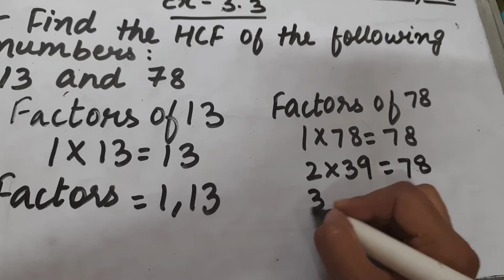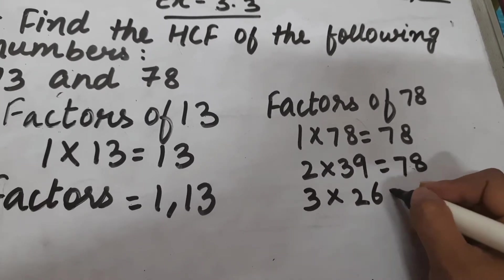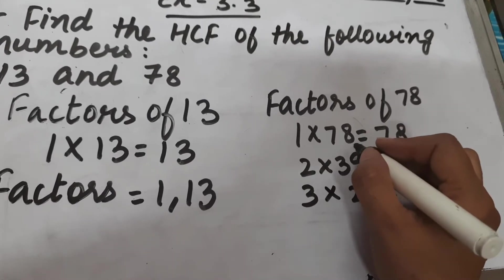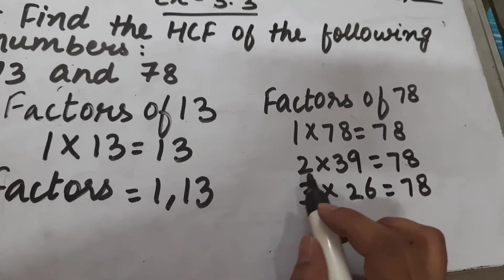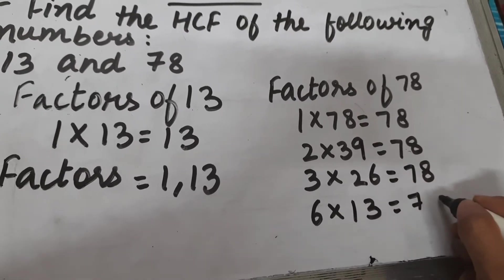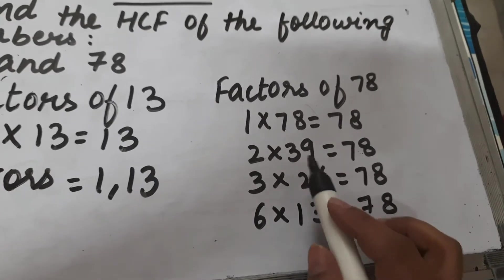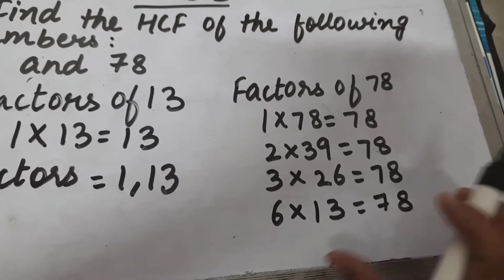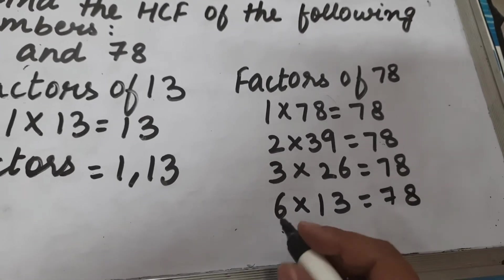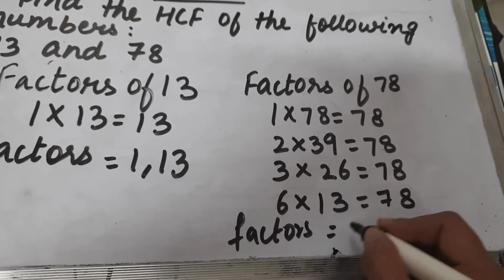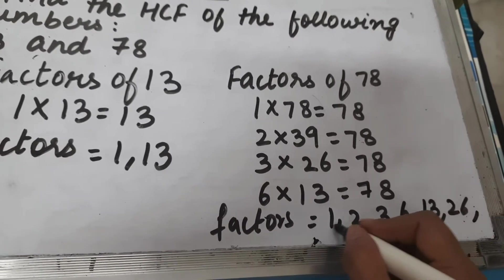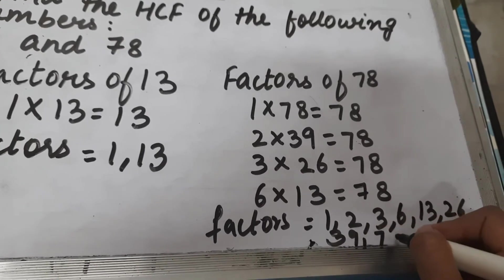Checking divisibility of 78: 7 + 8 = 15, so it is divisible by 3. 3 × 26 = 78. It is not divisible by 4 or 5. It is divisible by 6 because it is divisible by both 2 and 3: 6 × 13 = 78. Not divisible by 7, 8, or 9. 13 × 6 = 78, and repetition starts here.